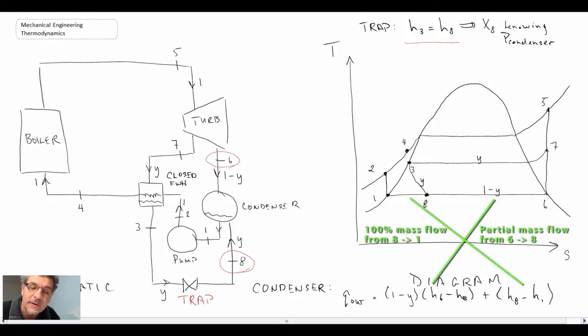This is the way that we determine conditions through the trap, so that is if you have regenerative Rankine with the closed feedwater heater and a trap. So with that, that concludes the efficiency gains that you can play with the Rankine cycle, and we looked at Rankine with reheat and we've looked at regenerative Rankine, two types: both open and closed feedwater heaters.